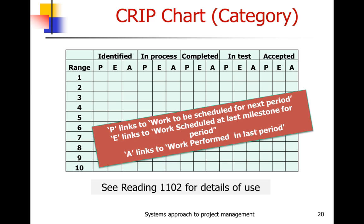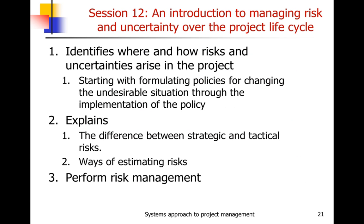The lecture gives an overview of reading 11-02, and you get details and lots of examples of the crypt chart's use in the reading — available as homework the evening before the session or as a reference after the course. Session 12 deals with risks and uncertainty. It identifies where, when, and how risks and uncertainty arise in a project — from formulating a policy to changing an undesirable situation, through selecting a contractor and implementing necessary changes. It explains the difference between strategic and tactical risks, ways of estimating risks, and you get to perform some risk management.